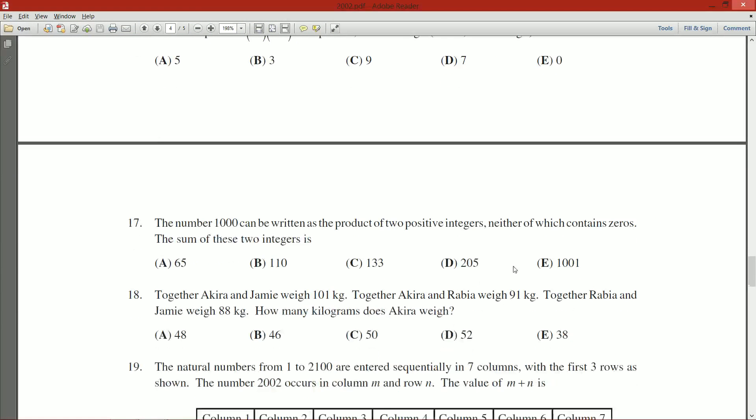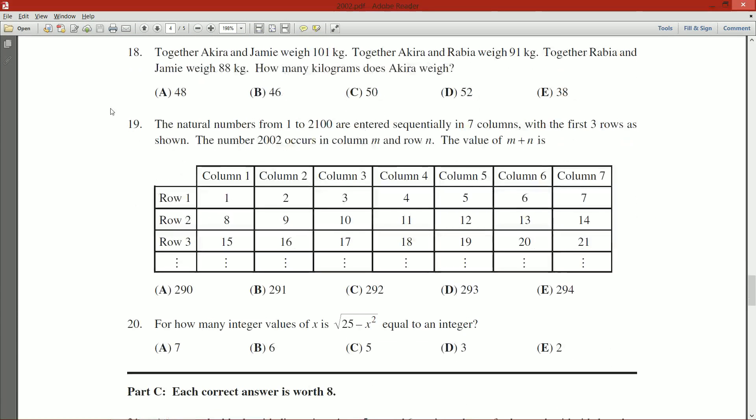And we are up to question 19. There it is. Question number 19. The natural numbers from 1 to 2100 are entered sequentially in seven columns. So here we have it down here. We go 1, 2, 3, 4, 5, 6, 7, and that's in column 7. And then we go 8, 9, 10, 11, 12, 13, 14.